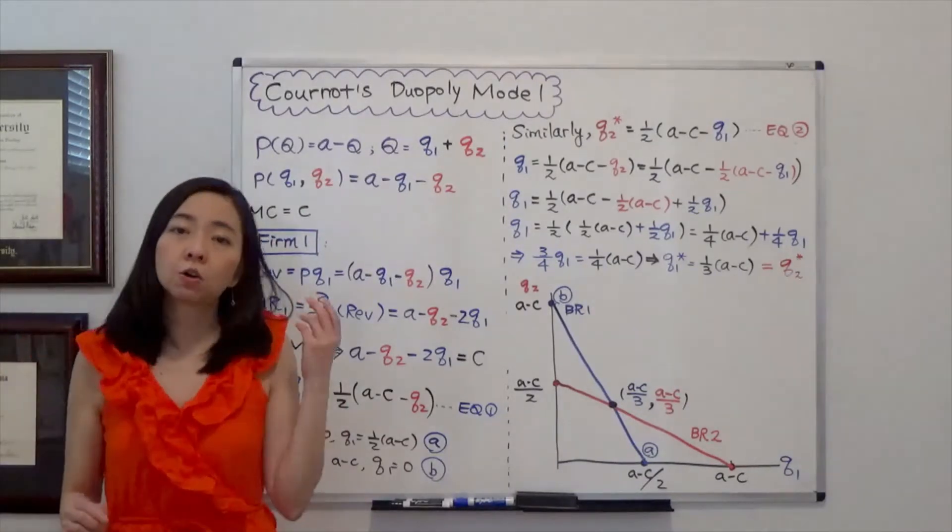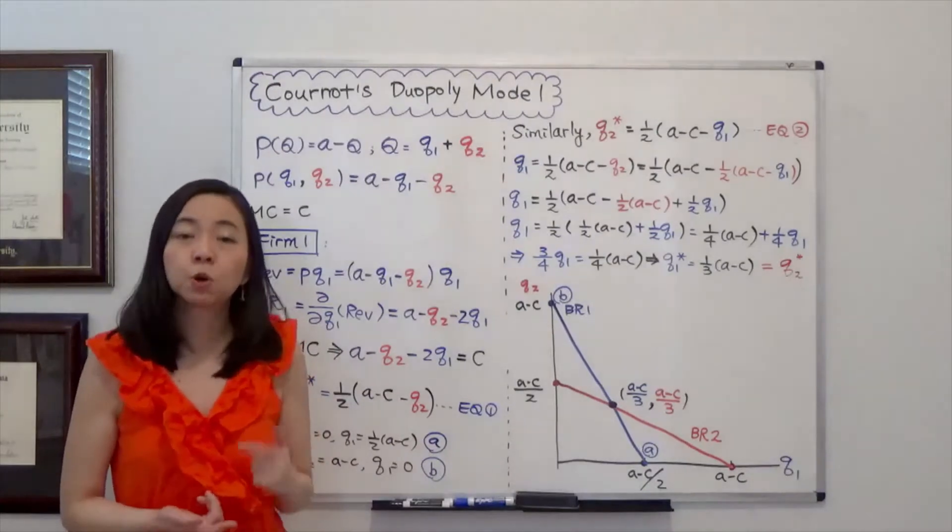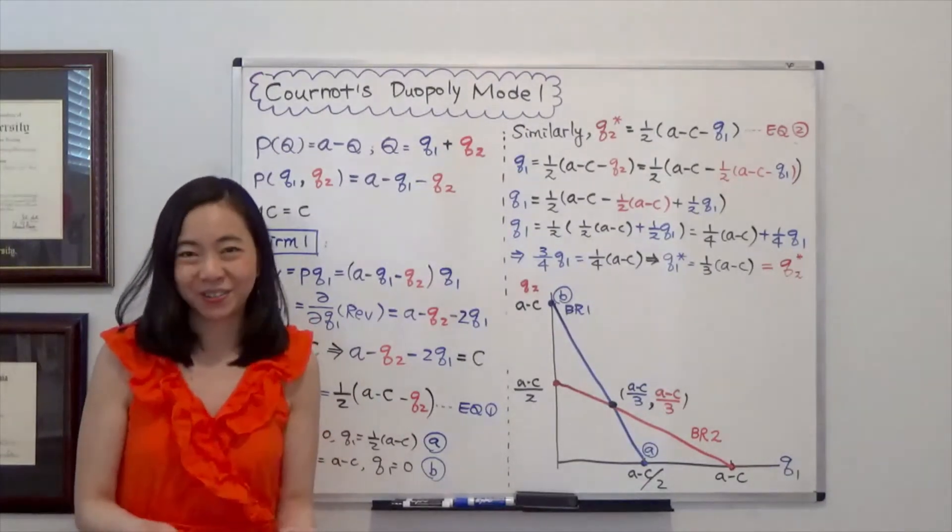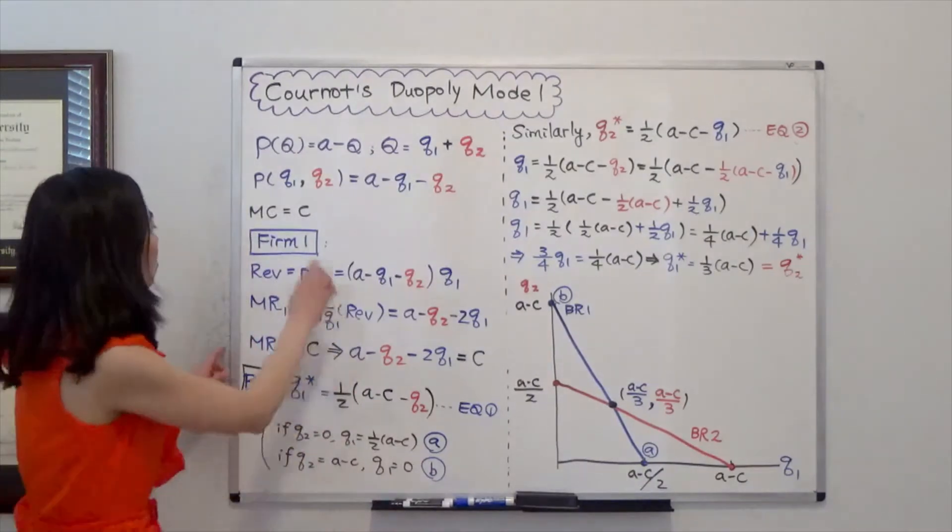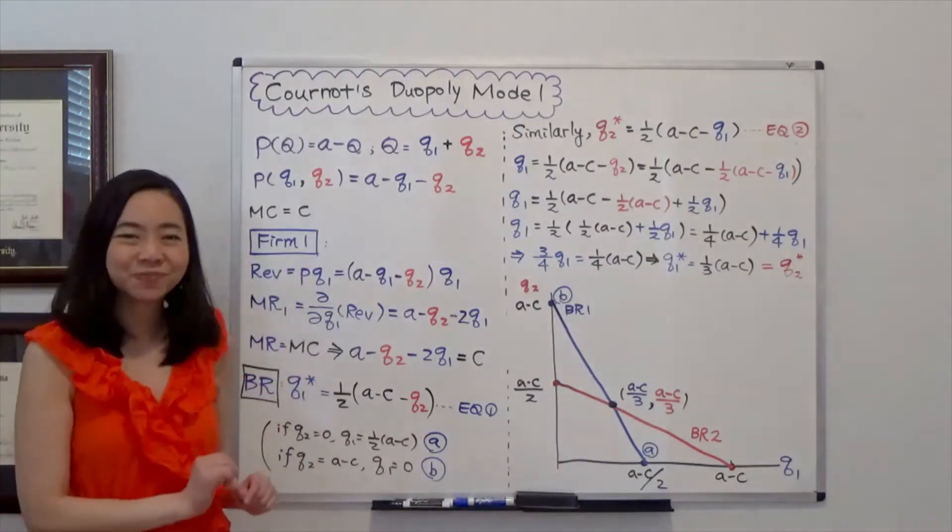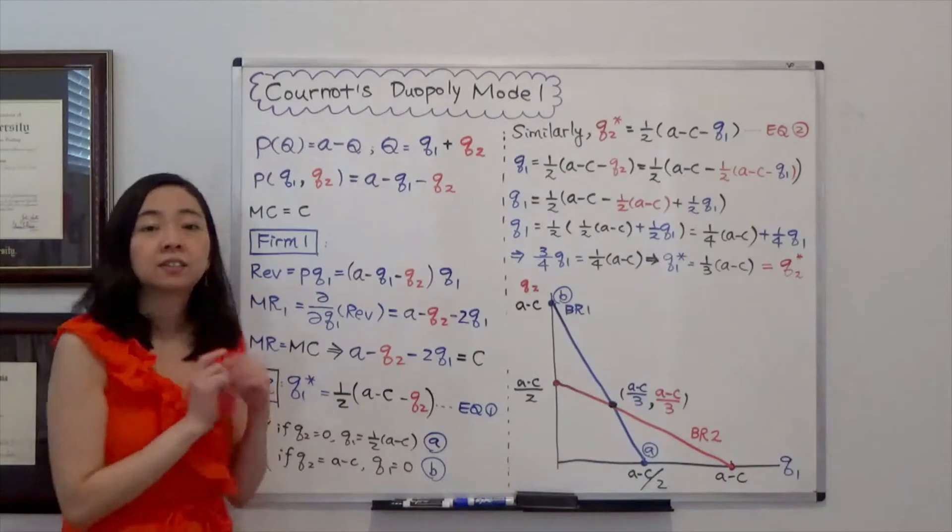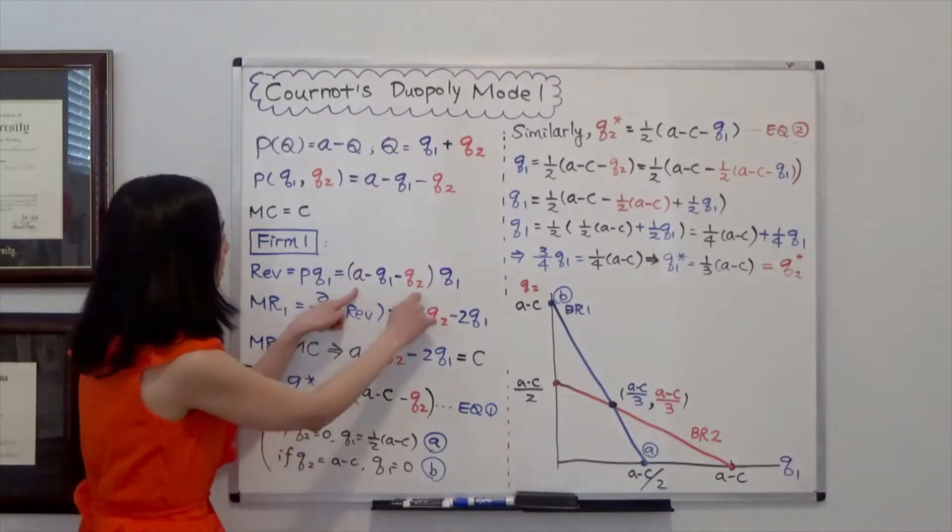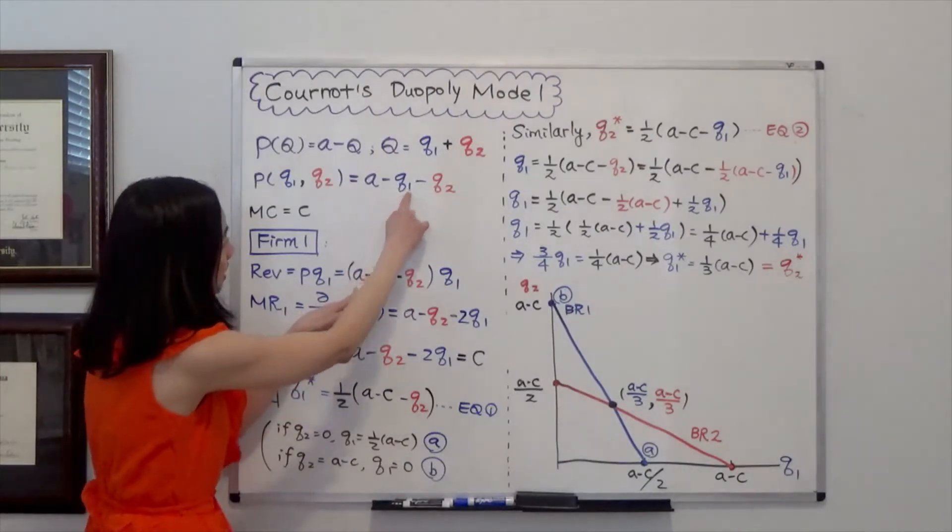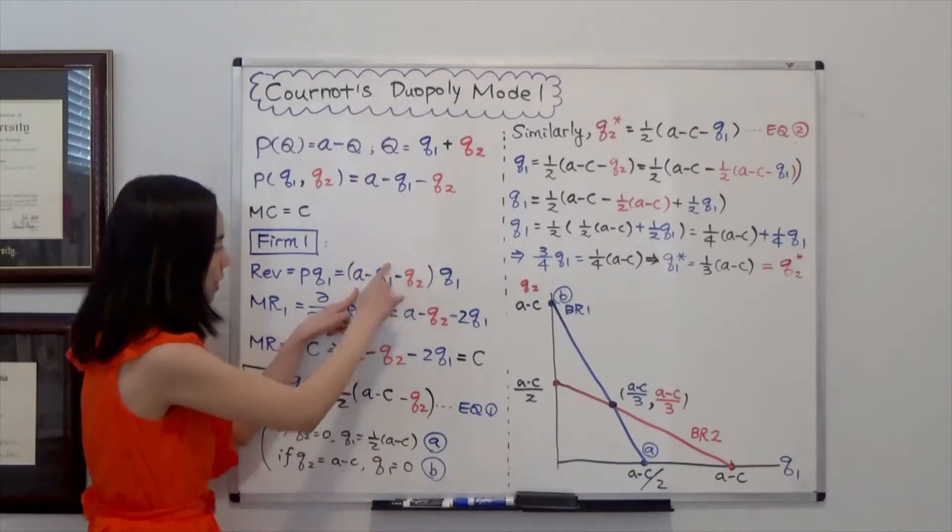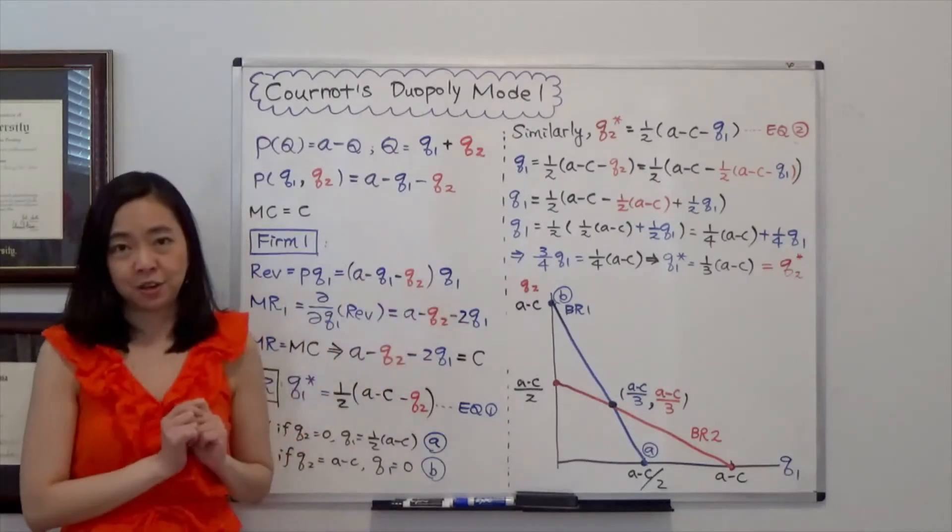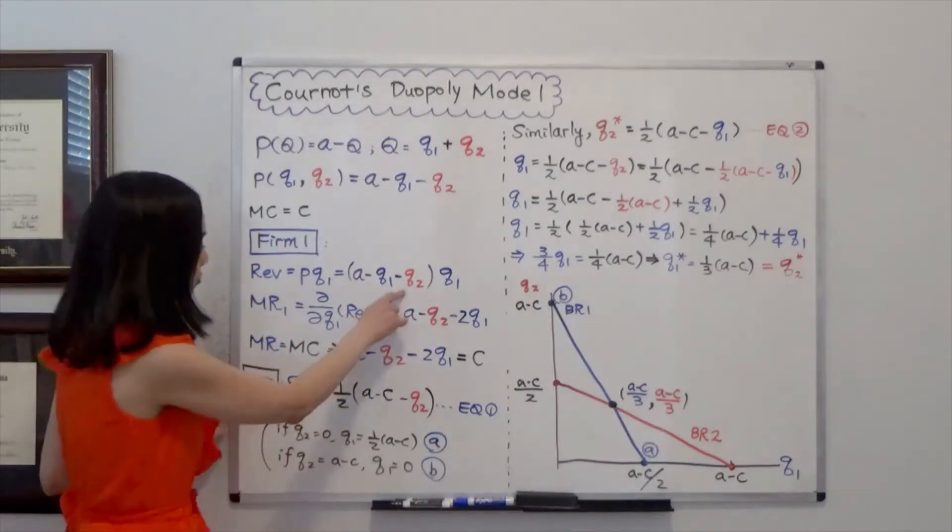So we are going to solve for the optimal quantity for firm 1 and firm 2 simultaneously. So here we first take a look at firm 1's problem. Revenue is equal to price times quantity. So here price is also equal to A minus Q1 minus Q2. So we just substitute that in. So the price times the quantity of firm 1. That's the revenue.